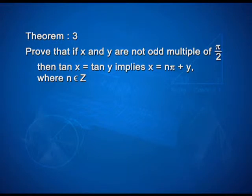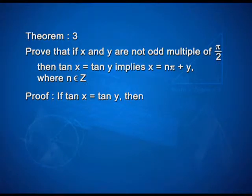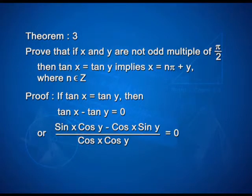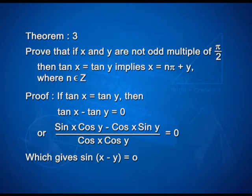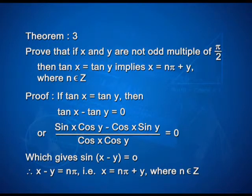In the next theorem, if x and y are not odd multiples of π/2, then tan x = tan y implies x = nπ + y, where n ∈ ℤ. For the proof, if tan x = tan y, we can write (sin x cos y − cos x sin y)/(cos x cos y) = 0, which gives sin(x − y) = 0. Therefore, x − y = nπ, that is x = nπ + y, where n ∈ ℤ.